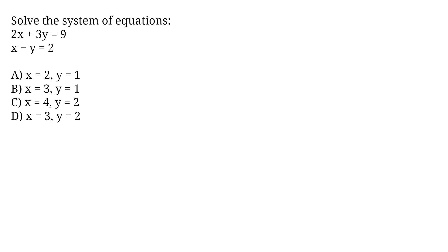Solve the system of equations: 2x plus 3y equals 9, and x minus y equals 2. A. x equals 2, y equals 1. B. x equals 3, y equals 1. C. x equals 4, y equals 2. D. x equals 3, y equals 2.